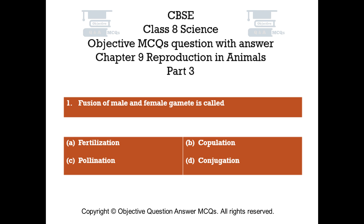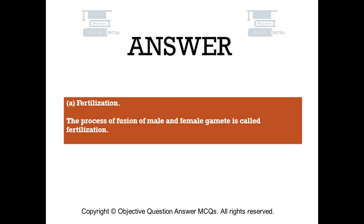Question number 1. Fusion of male and female gamete is called. Option A: Fertilization. Option B: Copulation. Option C: Pollination. Option D: Conjugation. The right answer is option A — Fertilization. The process of fusion of male and female gamete is called fertilization.